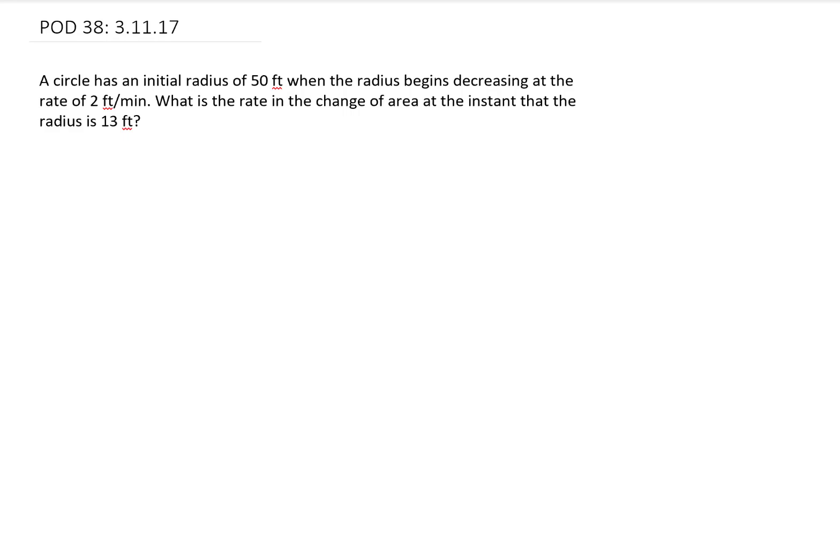So this is what we call a related rates problem. We're given one rate here, and that is the rate with which the radius is decreasing. What that means mathematically is dr/dt, the rate of change of the radius, is going to be negative 2, and that's negative because the radius is decreasing. We're asked to find the rate of change of our area, and using calculus notation that means we need to find dA/dt, the rate of change of the area.